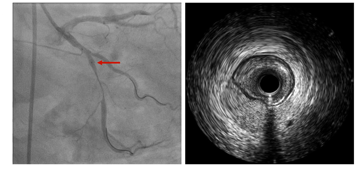In the proximal part, this is the hematoma and this is the true lumen. The way to differentiate hematoma from atherosclerosis is to look at the media, which appears as a dark circle on IVUS. Atherosclerotic plaque appears inner to this layer because it involves the intima, while the hematoma appears between the layers of the media or outside the media. In some cases, we can see the media is split into two parts.